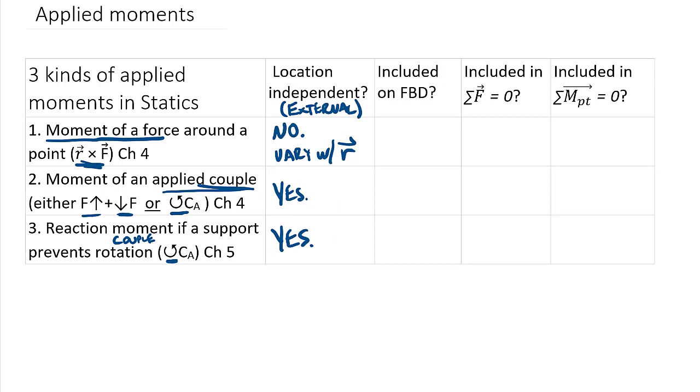It turns out that all three of these do need to be included on a free body diagram. So you could have a problem that has r cross f moments, a problem that additionally has an applied couple, and finally also a reaction couple. So you can have all of those. They're all included on a free body diagram.